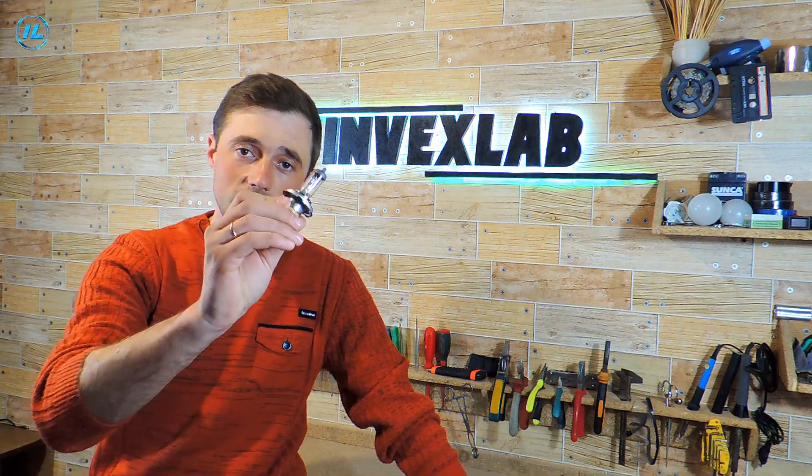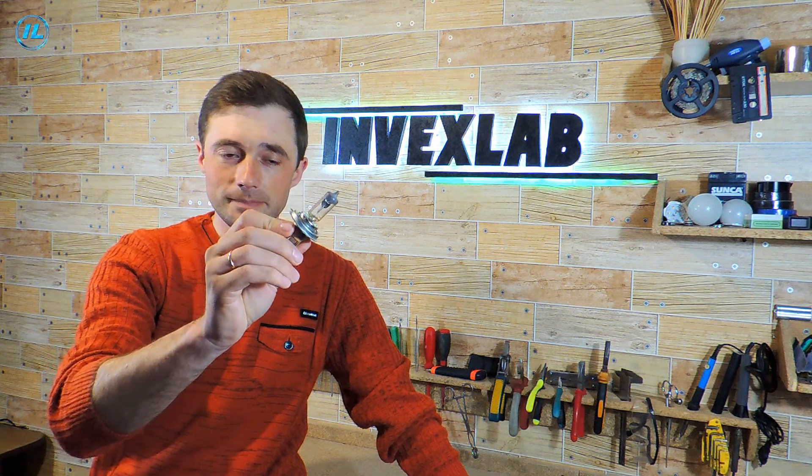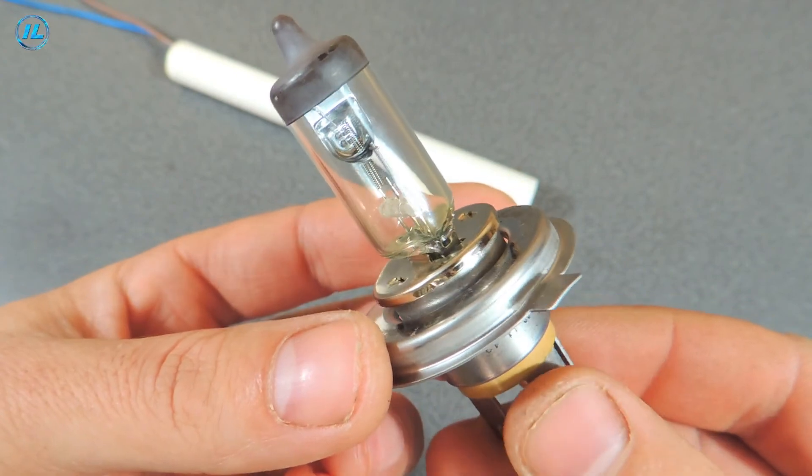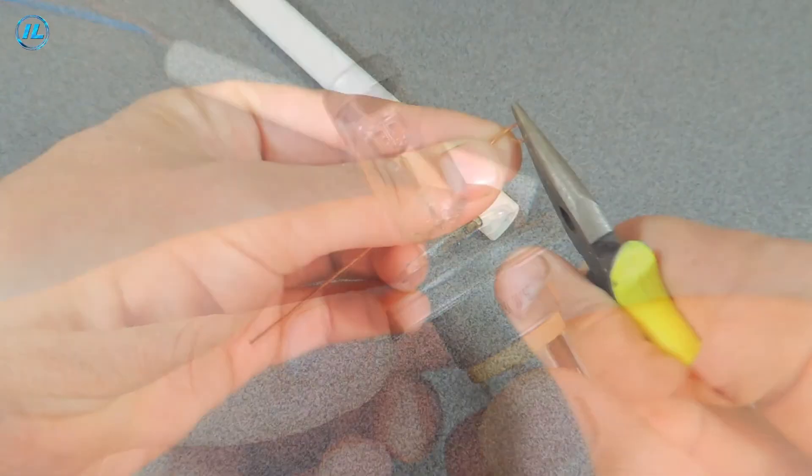The first version of the infrared soldering iron is the simplest. All you need to make it is a car halogen lamp. This halogen lamp has two spirals. I'll use the one under the reflector.